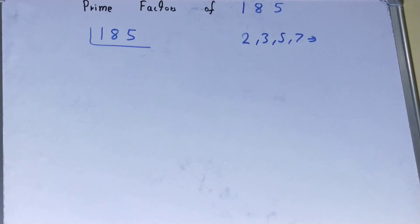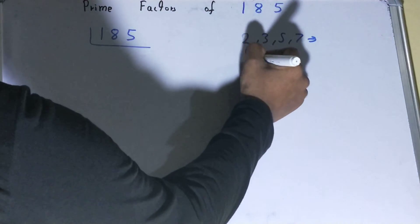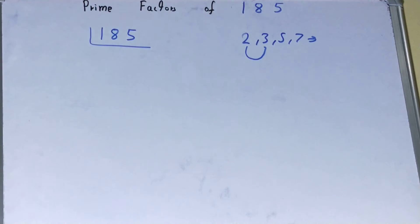number we have, that is 2. Is 185 divisible by 2? Clearly not, because it is an odd number. So we'll go to the next lowest prime number, that is 3.